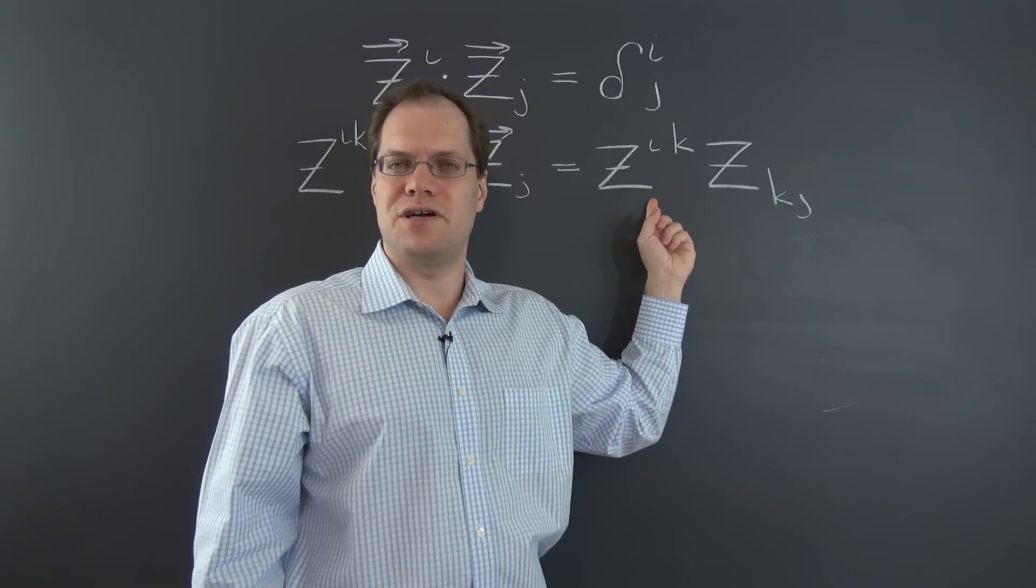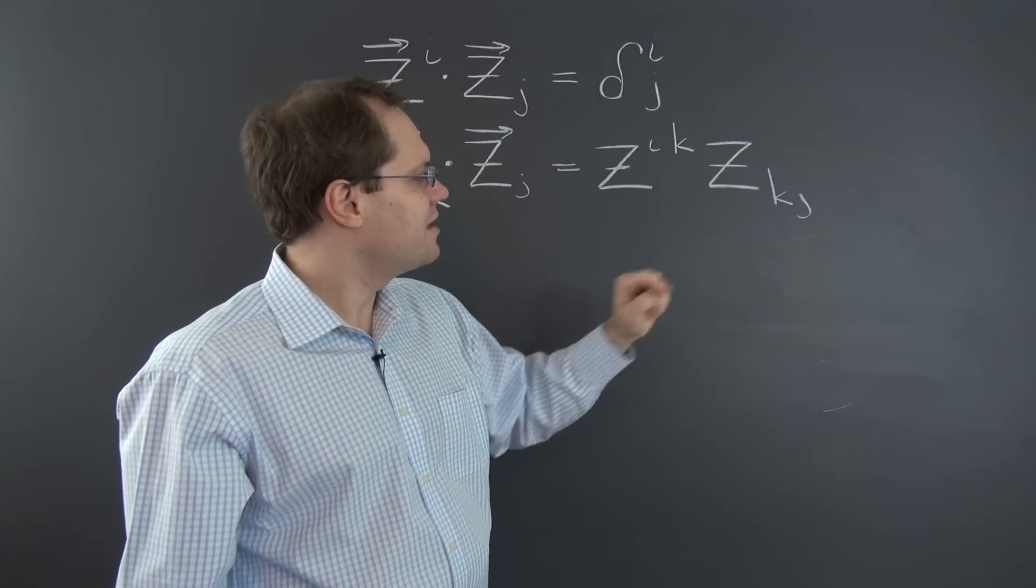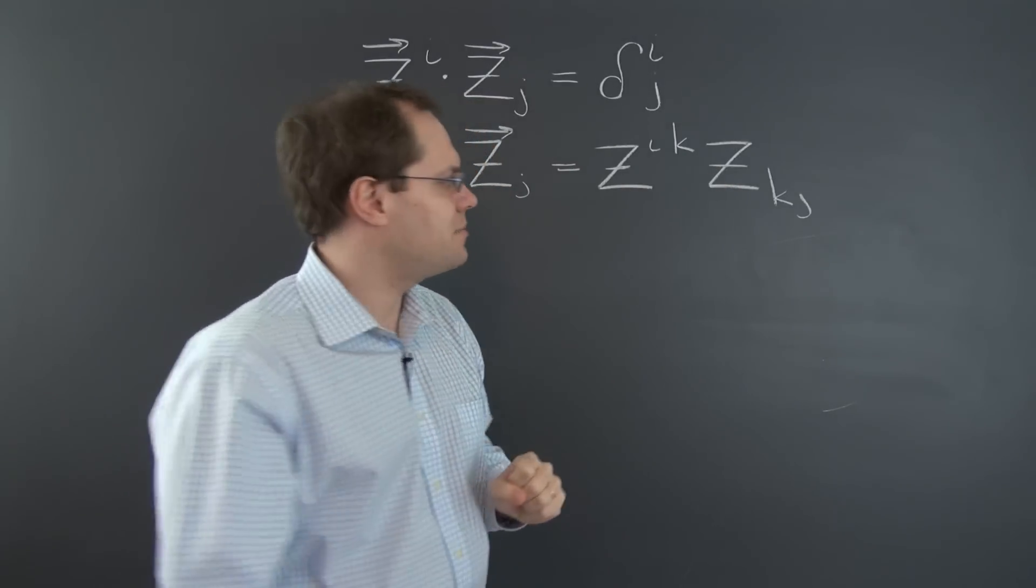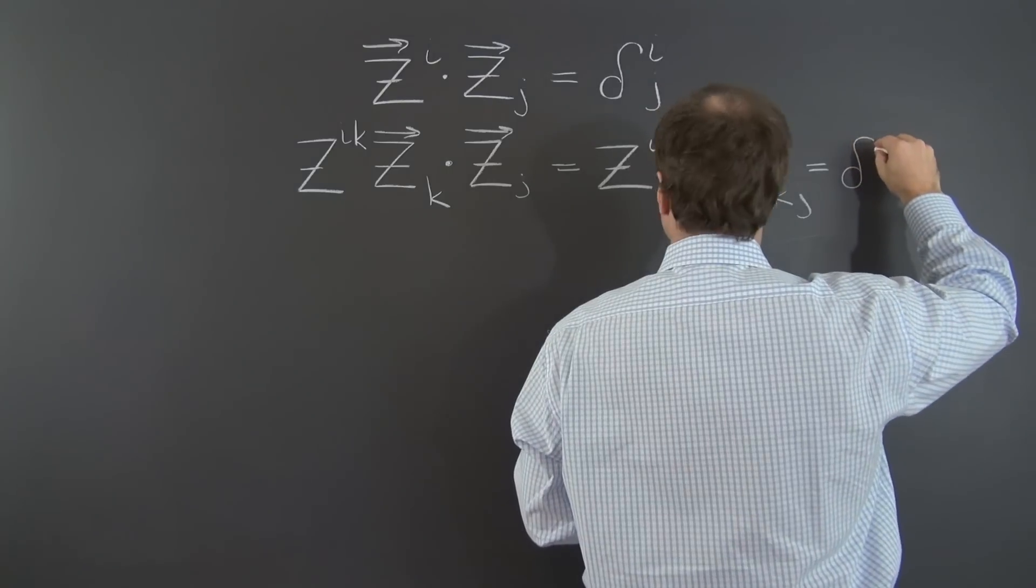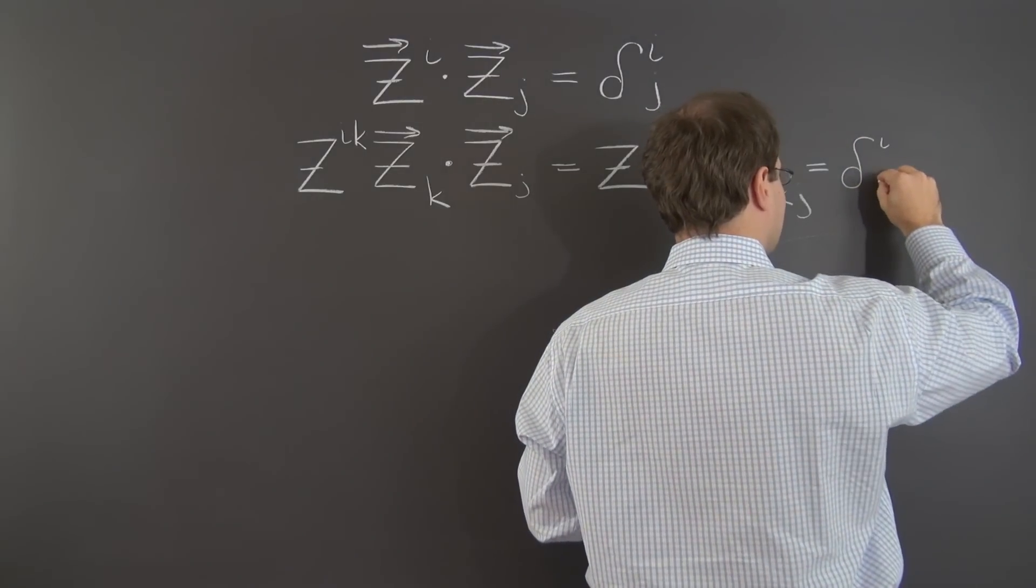And now, by the definition of the contravariant metric tensor, this is the quote-unquote identity matrix, or in the language of tensors, the Kronecker delta δ^i_j.